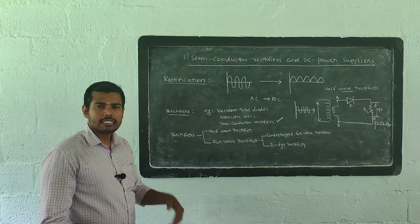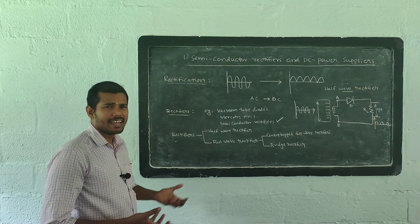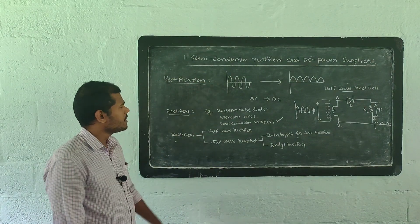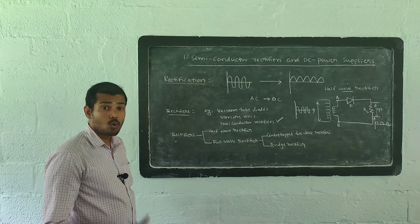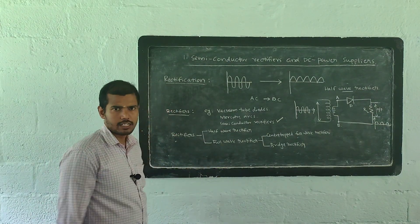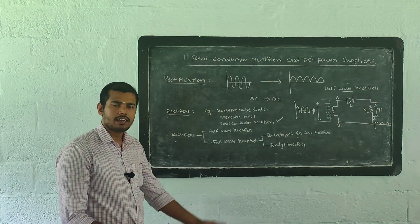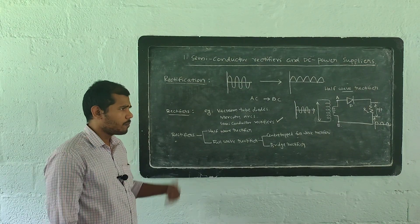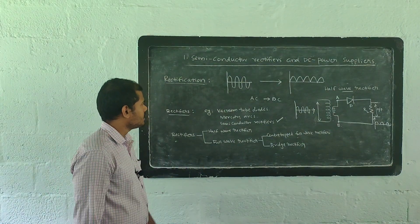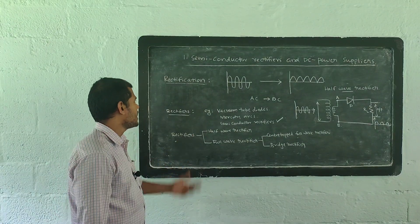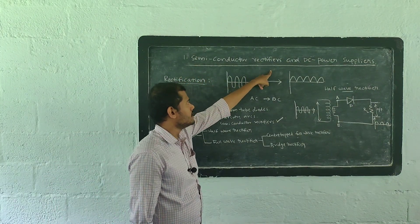Conductors allow the passage of electricity always. Insulators never allow the passage of electricity. Certain materials like Silicon, Germanium etc. allow electricity only under certain conditions — such materials are known as Semiconductors. Silicon and Germanium cannot conduct electricity at room temperature, but if we heat them they can conduct electricity. If we dope materials like Gallium, Arsenic etc. with them, they can conduct electricity. That process is known as doping. Such materials are known as Semiconductors, which can allow the passage of electricity only under certain circumstances or conditions.